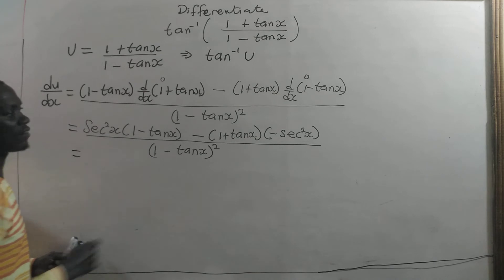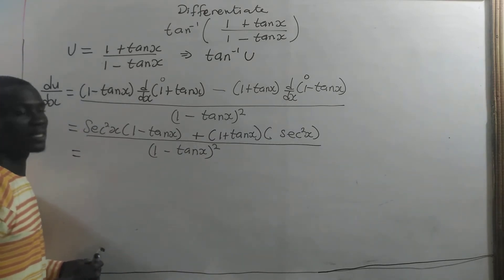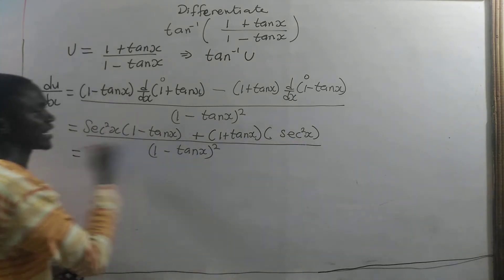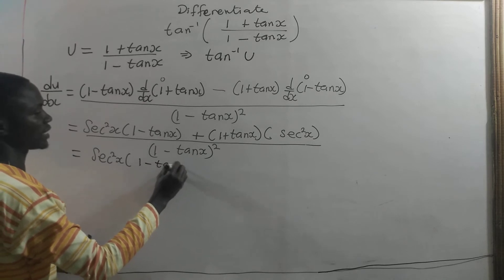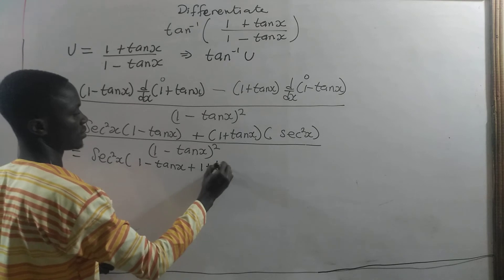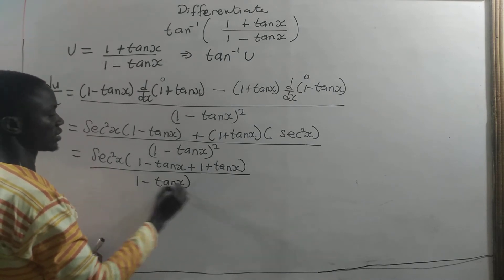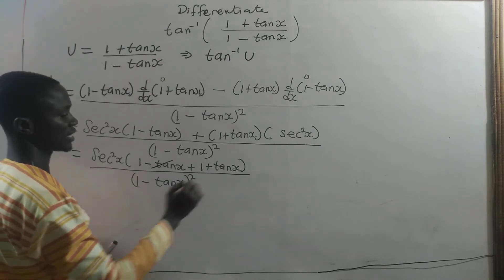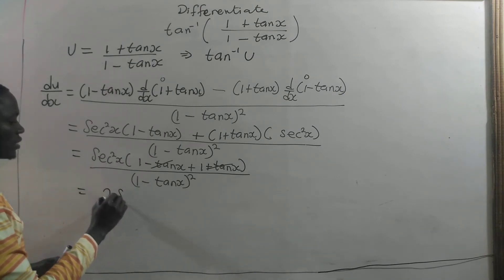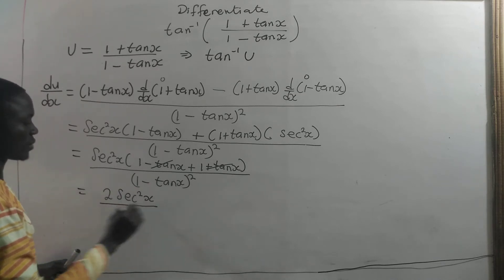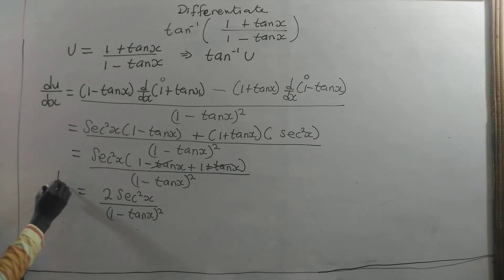Here we have negative times negative giving positive. We factorize secant squared out, giving secant squared of x times (1 minus tangent of x plus 1 plus tangent of x), all divided by (1 minus tangent of x) all squared. Negative tangent of x plus tangent of x gives zero, so we are left with 2 times secant squared of x divided by (1 minus tangent of x) all squared as the derivative of u with respect to x.